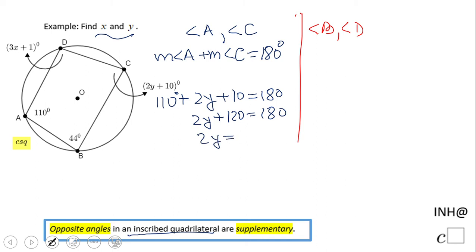We subtract 120 from each side and we get 60. Divide by 2 and Y equals 30. That is the value of Y.